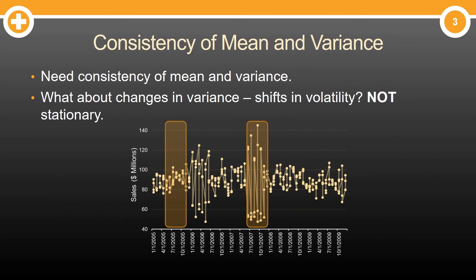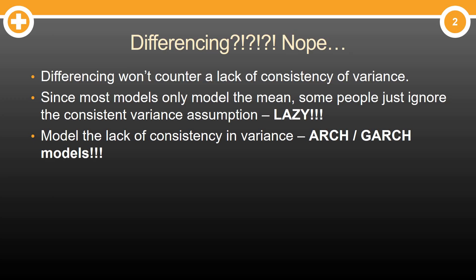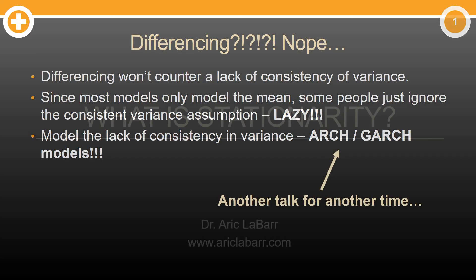That's in terms of consistency of mean. What about changes in variance? When we have shifts in variance — shifts in volatility — this is not stationary. Unfortunately, differencing won't actually help us here. Since most models only model the mean, some people just ignore the consistent variance part of the assumption. You can actually get around this by modeling the variance itself, using what we call ARCH and GARCH models — but that's another talk for another time.